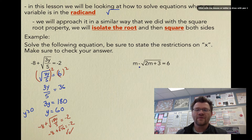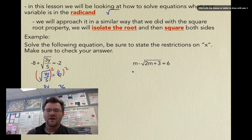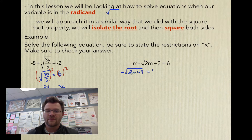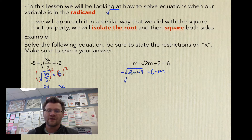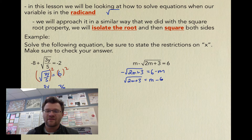Our second example has a binomial on the left-hand side and a single term on the right-hand side. We need to isolate our root again, so we subtract m from both sides, ending up with negative square root of (2m + 3) equals 6 minus m. Your best bet is to multiply both sides by negative 1 to remove the negative from the radical side.